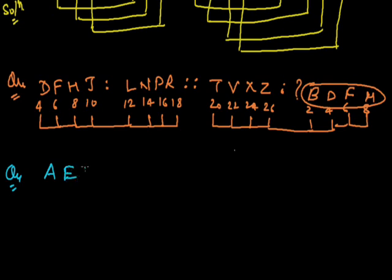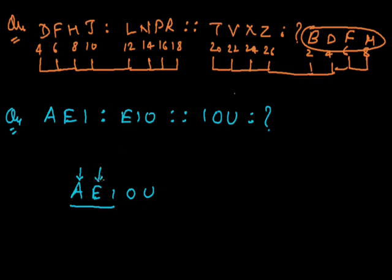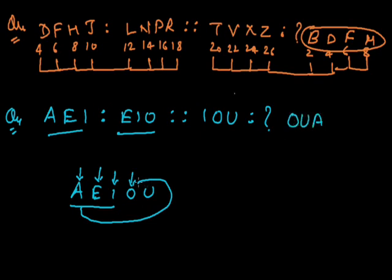Next question: A, E, I is related to E, I, O — in the same way U is related to what? In this question we see the vowels are A, E, I, O, U. The relation is: A, E, I starts from the 1st vowel; E, I, O starts from the 3rd vowel. So U continuing from the next vowel in the cycle gives O, U, A. Answer is O, U, A.